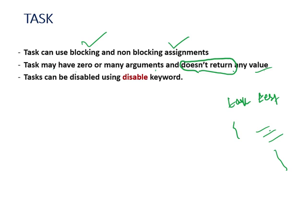A task may have zero or many arguments. Since a task is a block, it can be disabled using the 'disable' keyword — similar to how we used named blocks with 'disable' in fork-join and begin-end constructs. A task can be terminated or disabled using this 'disable' keyword.